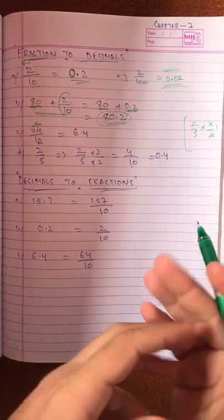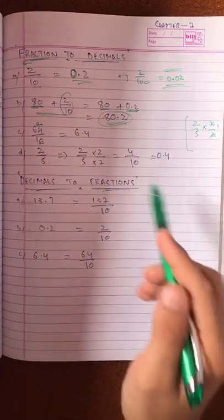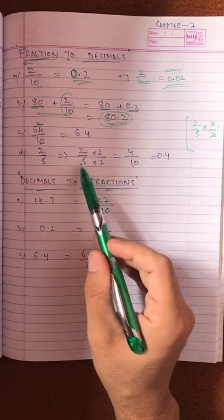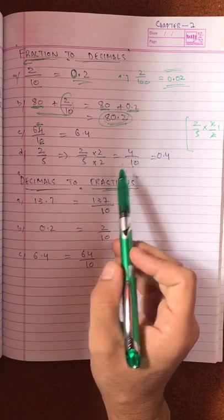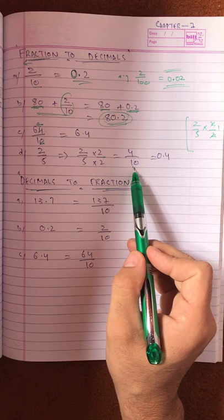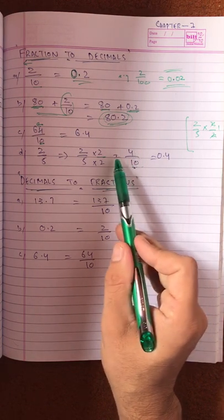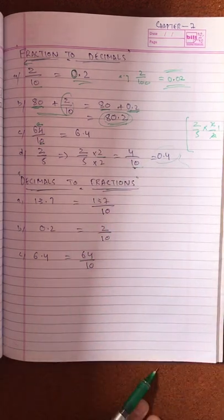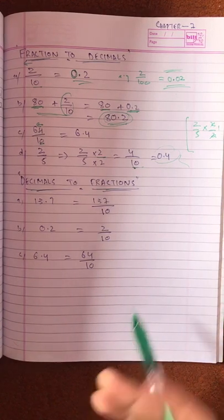For example, 2 by 5, if we multiply by one, it stays 2 by 5. So if we multiply 2 by 5 by 2 over 2, that means we are multiplying by one. Two into two is four, five into two is ten. So here we have our denominator in the tenth form. One zero means the decimal goes one step left, so it's zero point four. If you have a fraction, you can convert it to decimal.